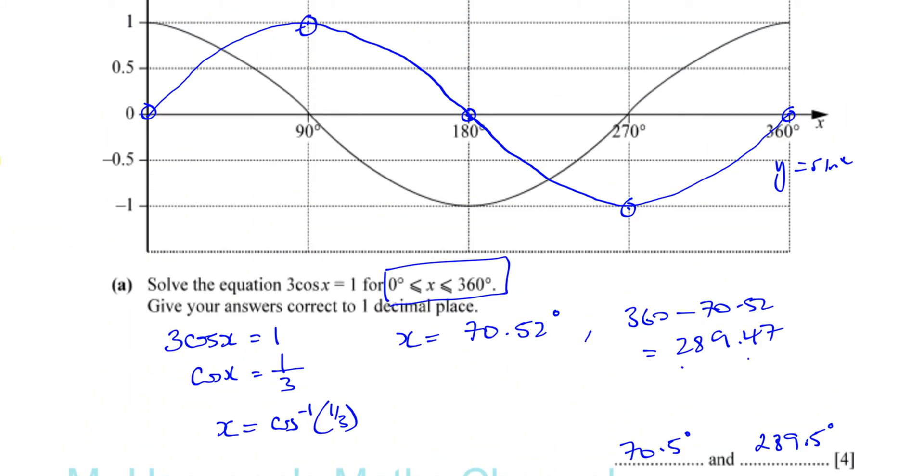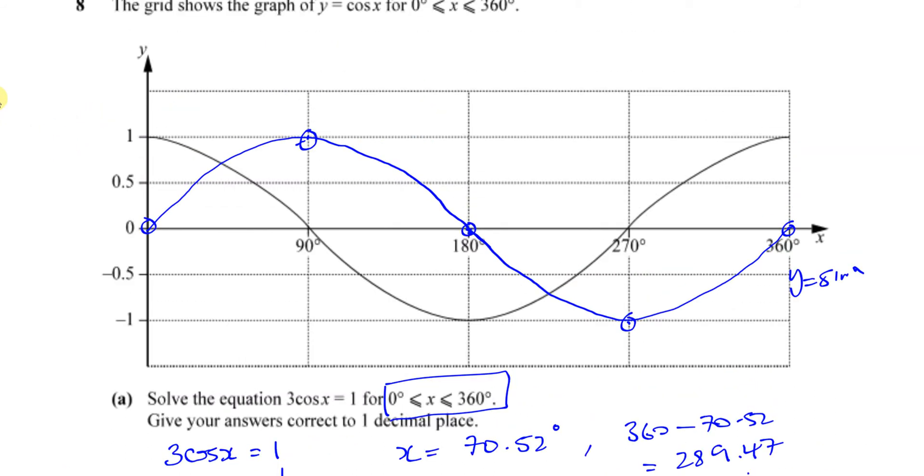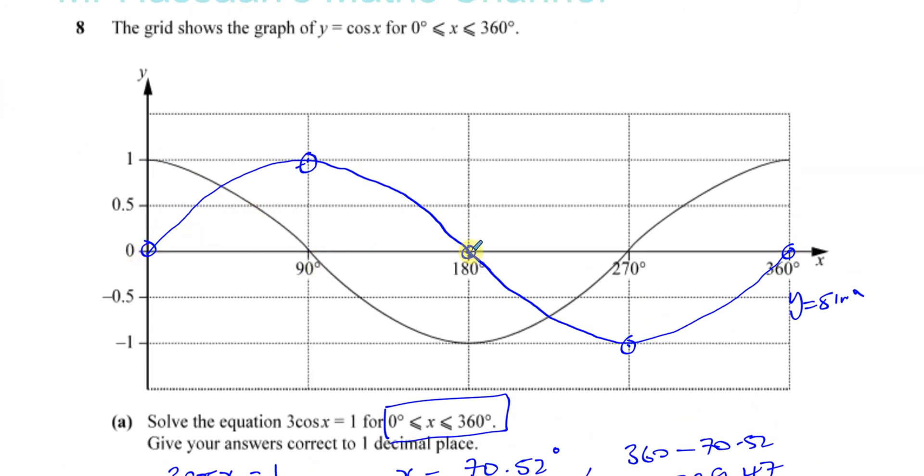Y equals sine x. That was part B. So that's the sketch. If you do forget how it looks, then you would basically put the values of 0, 90, 180, 270, 360 in your calculator, and then you'll see that's how it goes. It has the same kind of shape as the cosine curve.